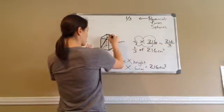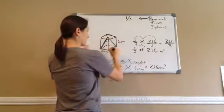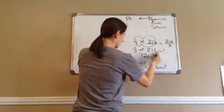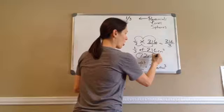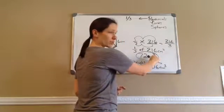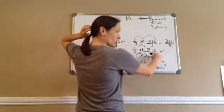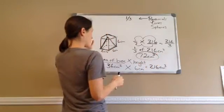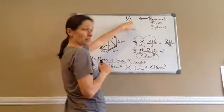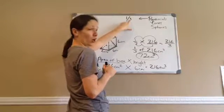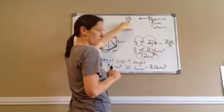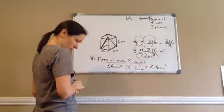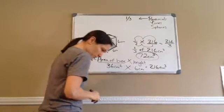216 divided by 3 is 72. So the answer to this pyramid is 72 centimeters cubed. Volume is always a cubed answer on the measurement — centimeters cubed — while area is centimeters squared. You need to write this down: a pyramid is one-third of the measurement of a cube.